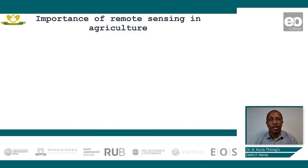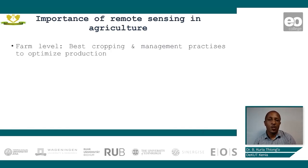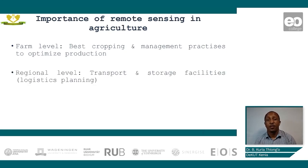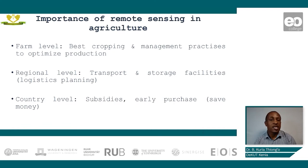Let us begin by looking at the importance of remote sensing in agriculture, and this we shall do by looking at three cases applicable to the country. The first is at the farm level, where farmers are advised on the best crop management practices. At the regional level, this helps with logistical planning, including transportation and storage of crops. At the country level, the government is able to make decisions pertaining to subsidies and the purchasing of food produced.